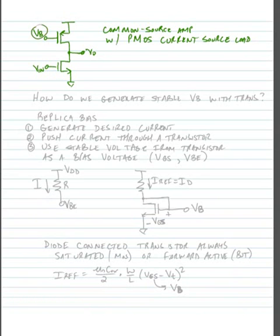So one thing that we might want to look at is how do we actually generate bias voltages like VB. And we're going to specifically ask how do we do this with a transistor. And what we're going to do is what we call a replica bias.